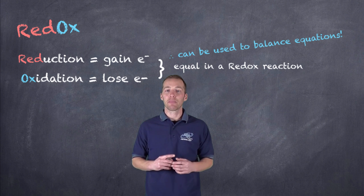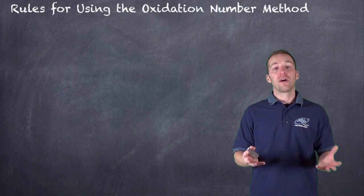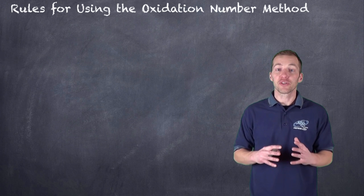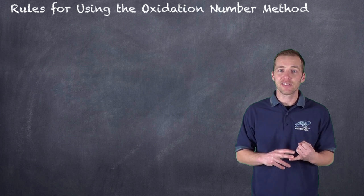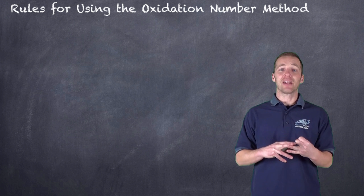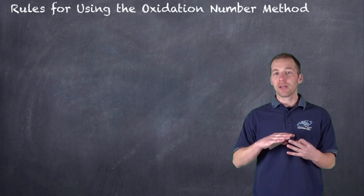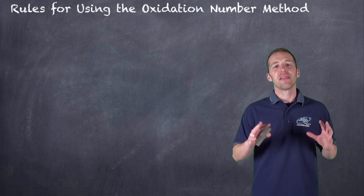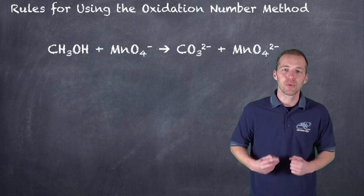The oxidation number method is actually a lot quicker than the half-reaction method, but it does take a little bit of practice. Just like redox has rules for assigning oxidation numbers and rules for the half-reaction method, there's also a set of rules for balancing using the oxidation number method. The best way to look at these rules is to apply them to an example.